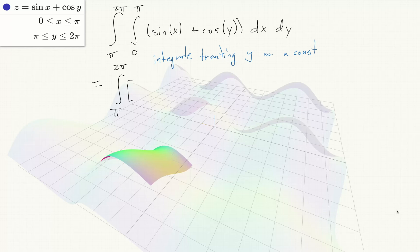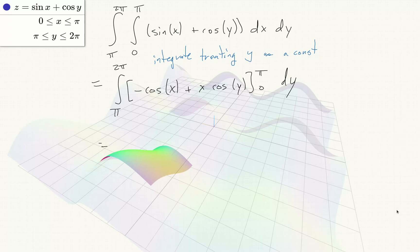So this will become negative cos x plus x cos y, and then we evaluate that at π and at 0 and subtract the result, dy.